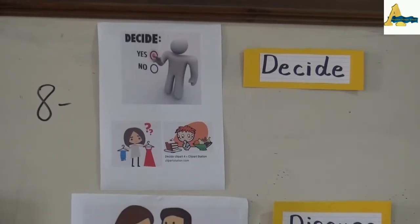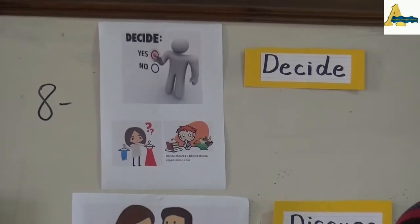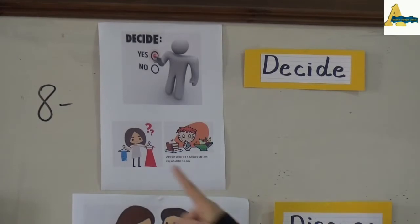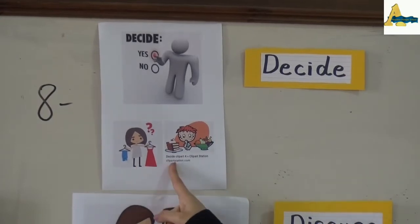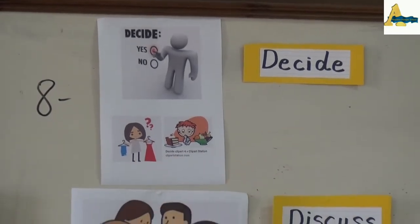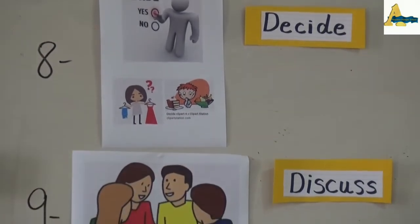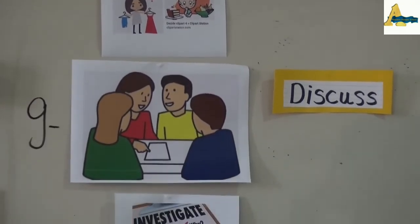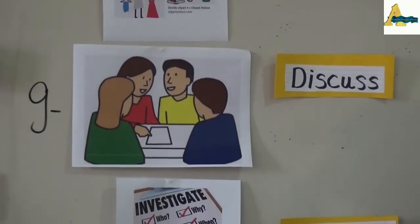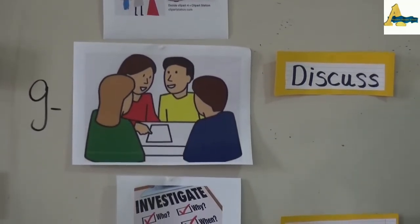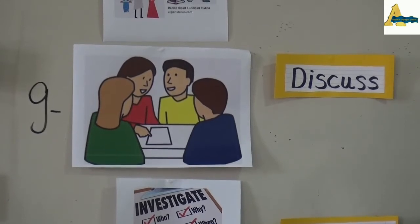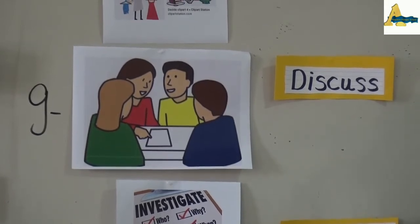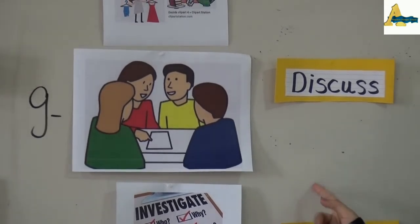Number eight, decide — it means to choose or elect between two things. Number nine, discuss — it means to talk about something, or to have a discussion or argue. Like whenever we have a project, we are going to discuss together what to do.